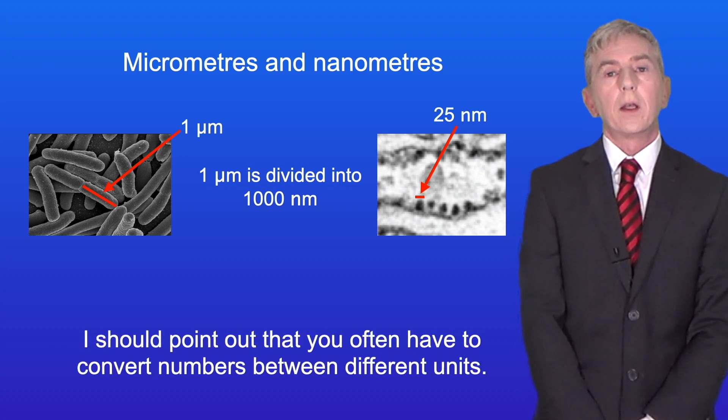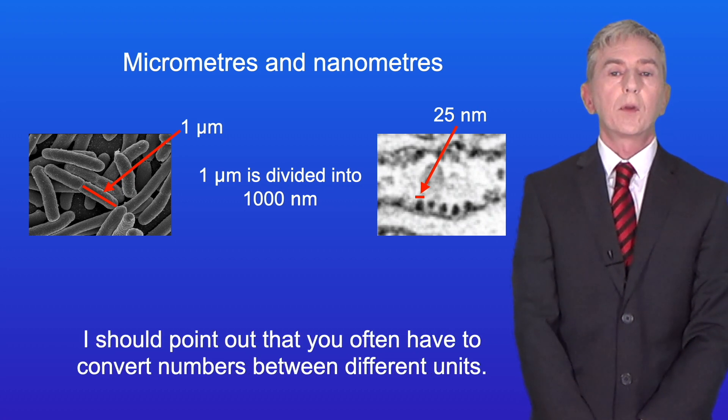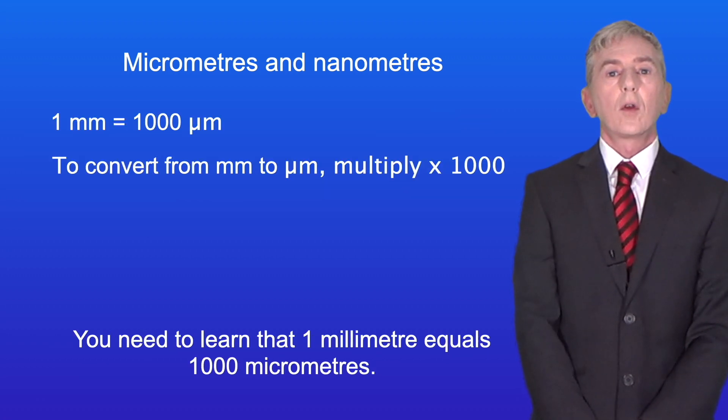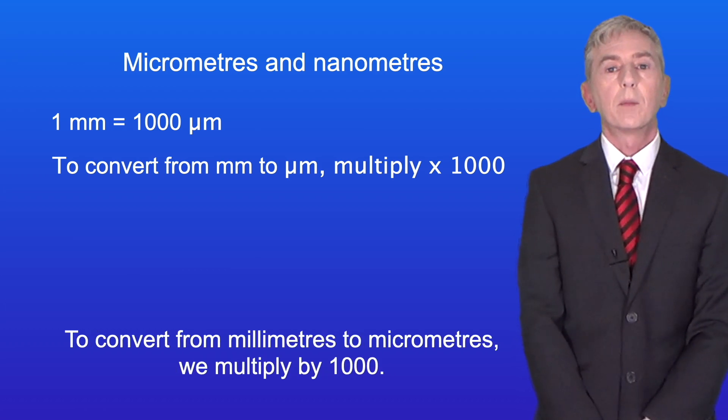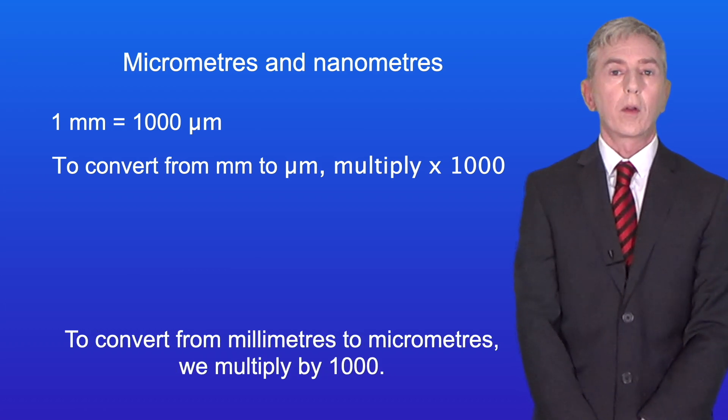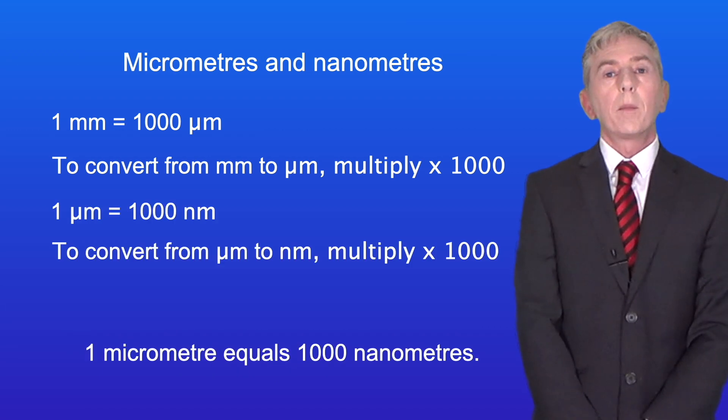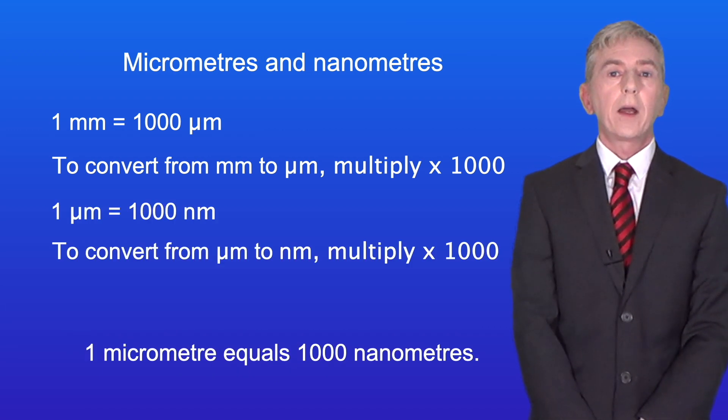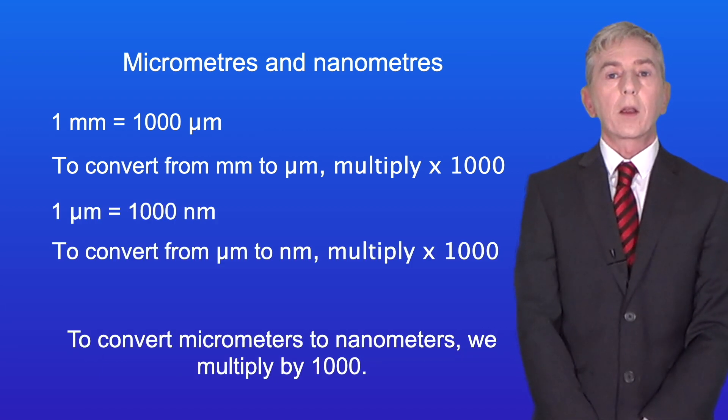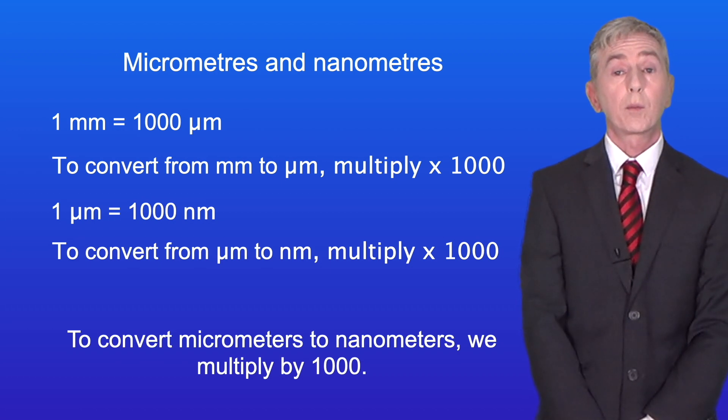Now I should point out that you often have to convert numbers between different units. So you need to learn that one millimeter equals one thousand micrometers. To convert from millimeters to micrometers we multiply by one thousand. One micrometer equals one thousand nanometers and to convert micrometers to nanometers we multiply by one thousand.